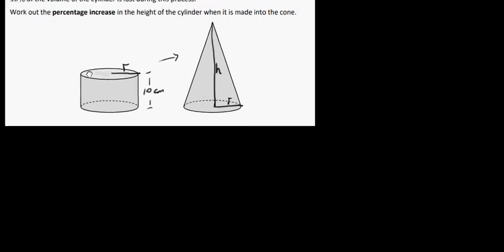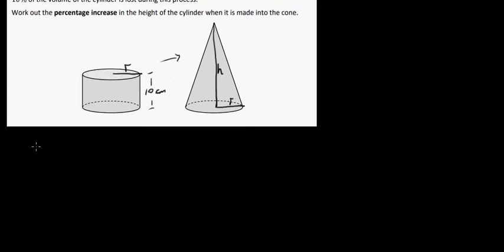Work out the percentage increase in the height of the cylinder when it is made into a cone. Okay, so we're looking at volumes here. So we've got to work out the volume of our cylinder. Volume of the cylinder is pi R squared H. In this particular case it's pi times R is R. So it's R squared here. And 10 is the height. So in other words we get 10 pi R squared. These are centimeters and it's cubed.